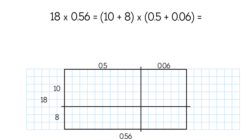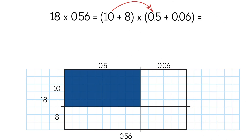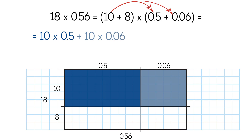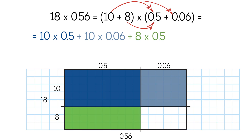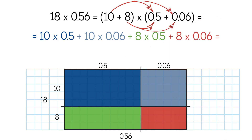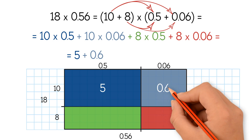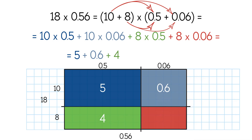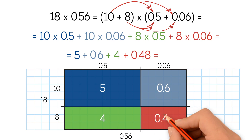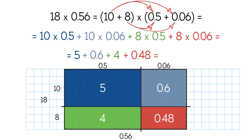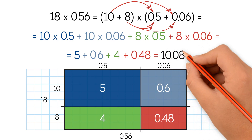First, we multiply 10 times 0.5, which is the area of the first smaller rectangle. Next, we multiply 10 times 0.06, which is the area of the second smaller rectangle. Now we multiply 8 times 0.5, which is the area of the third smaller rectangle. Finally, we multiply 8 times 0.06, which is the area of the last smaller rectangle. We get 5, 0.6, 4, and 0.48 as the partial products. We add them up to find the product of 18 and 0.56. So the answer is 10.08.